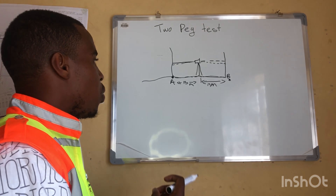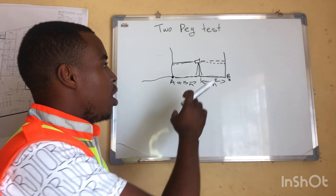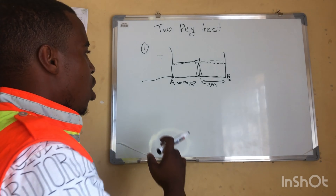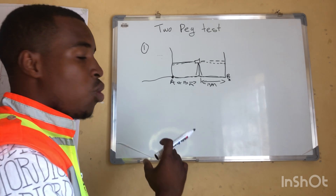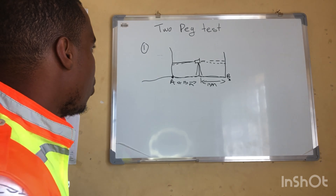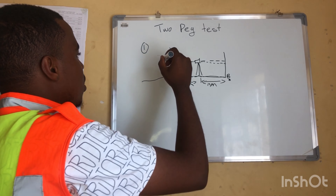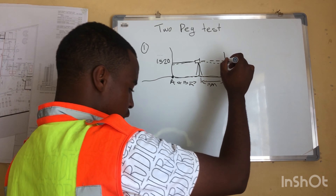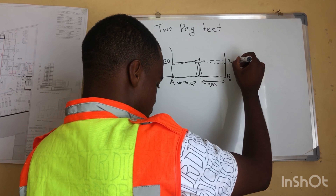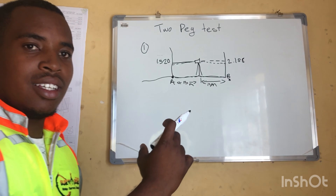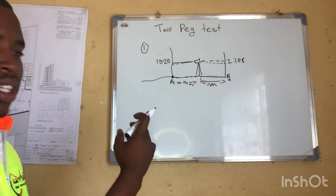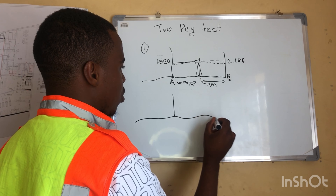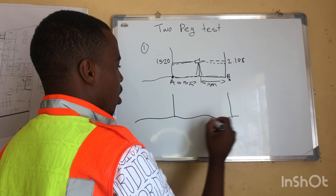Whatever elevation difference you get from this setup — let's call it Setup 1 — will be the correct elevation difference. From Setup 1, we observed that for A we got 1.520, then for B we got 2.158. You observe these readings in the field. After doing this, you then move the machine again.